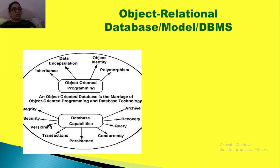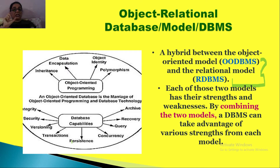The hybrid approach includes all object-oriented programming features — inheritance, data encapsulation, object identity, polymorphism — which are implemented through object-oriented programming languages. And the DBMS capabilities, which are the basic capabilities of a database like integrity, security, versioning, transactions, persistence, concurrency, query, recovery, and archive — it basically combines the two models, that is the relational model and the object-oriented model, to take advantage of both and combine the strengths of both models.